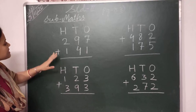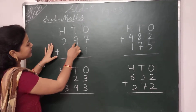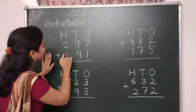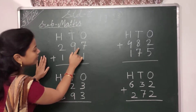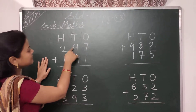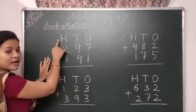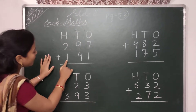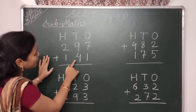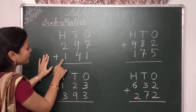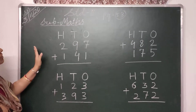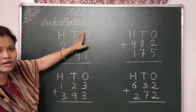Your first sum is 297 plus 141. In 297, 7 is in the 1's place, 9 is in the 10's place, and 2 is in the 100's place. In 141, 1 is in the 1's place, 4 is in the 10's place, and 1 is in the 100's place. We have to start the addition from the 1's place.